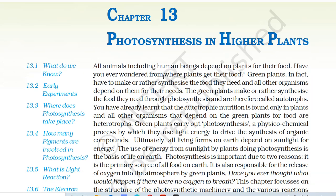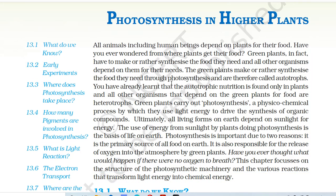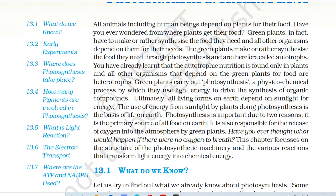All animals including human beings depend on plants for their food. Have you ever wondered from where plants get their food? Green plants in fact have to make or rather synthesize the food they need, and all other organisms depend on them for their needs. Green plants make or synthesize food through photosynthesis and are therefore called autotrophs. You have already learned that autotrophic nutrition is found only in plants, and all other organisms that depend on green plants for food are heterotrophs.